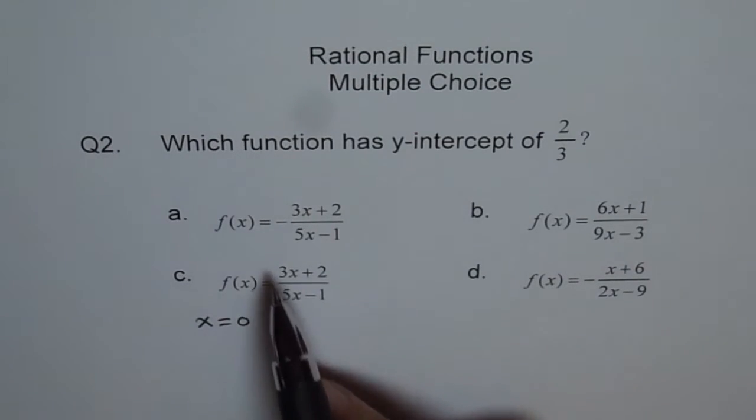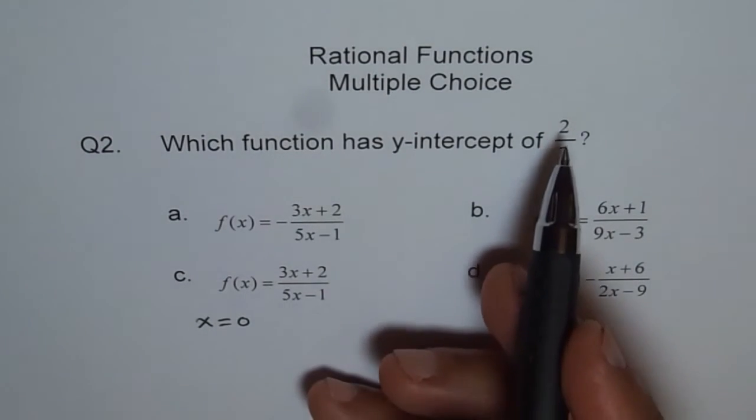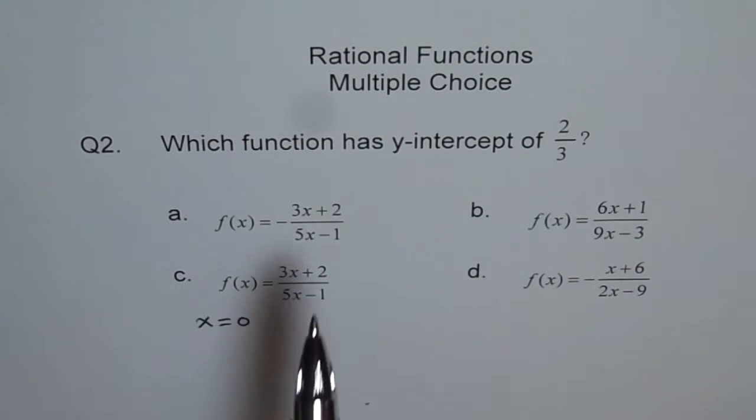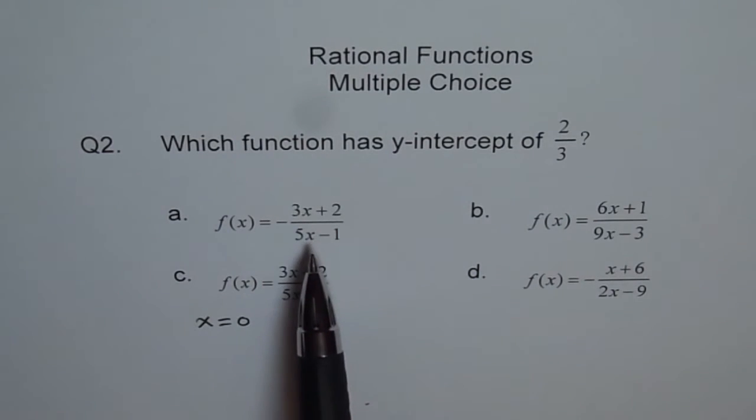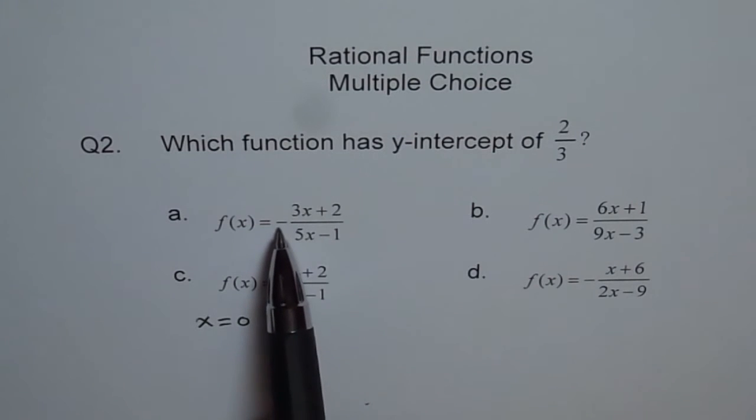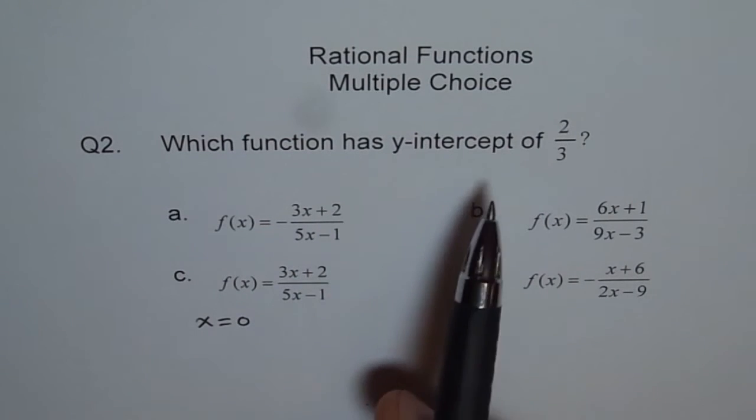So what we can do in any function, you just write x as 0 and check, do you get 2 over 3? So if I put x as 0, these 2 will be 0, I get 2 over minus 1 and minus of that is just 2 plus, that is not the answer.